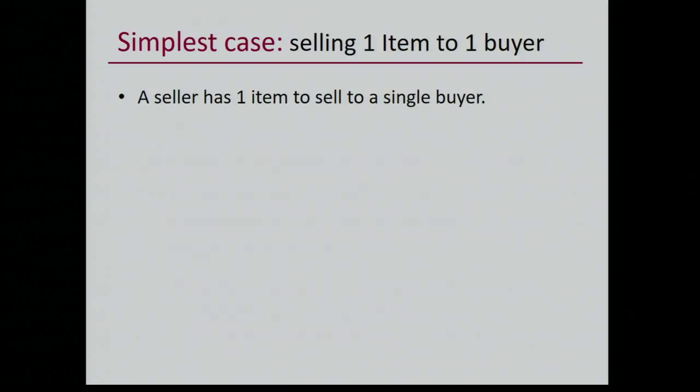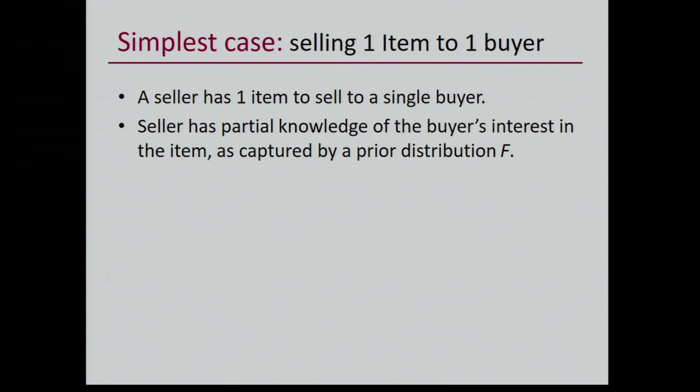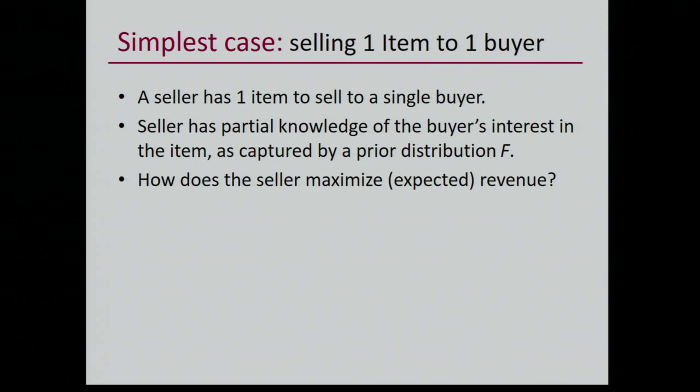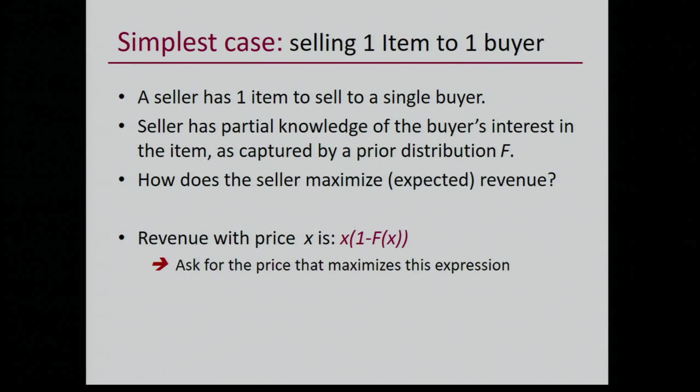In the simplest case, you have N equal to one and K equal to one. The seller has partial knowledge of the buyer's interests captured by a distribution F. The seller maximizes revenue by choosing a price X which maximizes X times the probability of the price being accepted.